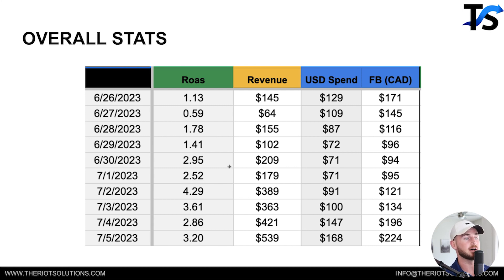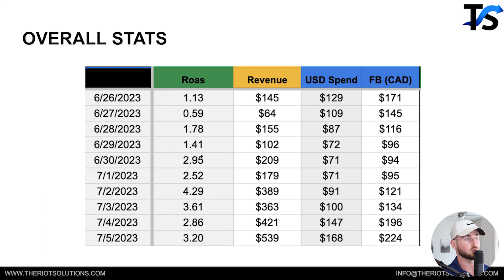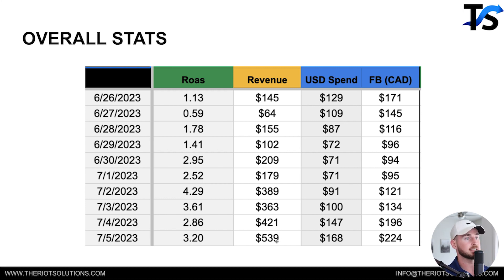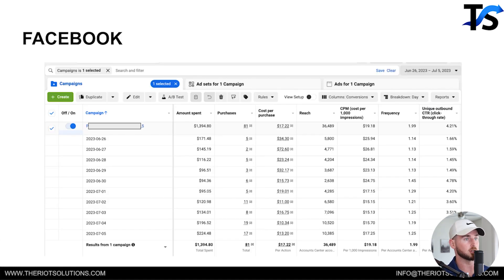I want to show you guys — basically on the 26th right here you can see just not the greatest performance from a ROAS perspective, literally from the 26th to 29th. Then on the 30th, things drastically started picking up for the better. We literally went from $145 a day in revenue all the way up to $539 a day in revenue. There are a couple of tactics we did to decrease our cost per purchase, and I'll show you inside of Facebook as well.